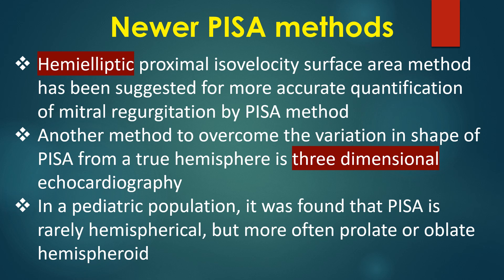In a paediatric population, it was found that PISA is rarely hemispherical, but more often a prolate or oblate hemispheroid.